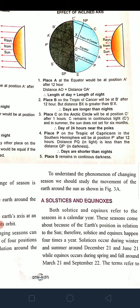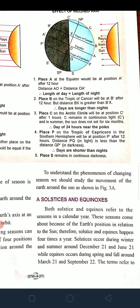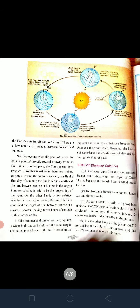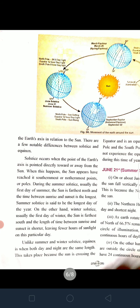Solstices and equinoxes happen four times in a year. Solstices occur during winter and summer, around December 21 and June 21. Equinoxes occur during spring and fall, around March 21 and September 22. On December 21 it is the longest night and shortest day; on June 21 it is the longest day and shortest night. Equinoxes have equal duration of day and night.